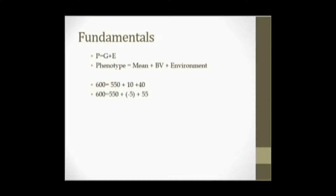Let's start with some fundamentals. Phenotype is really the sum of both genetic and environmental effects. We can further break that down and say that phenotype is equal to the mean of a given population, plus an animal's genetic merit or breeding value, plus any environmental effects. So if we look at these two animals here, who both have a 600-pound adjusted weaning weight, they both come from the same breed or population that has an average of 550 pounds. The animal at top has a positive 10 breeding value, and the animal at the bottom has a negative 5 breeding value. So although they both got to the same adjusted weaning weight, they got there in vastly different ways.